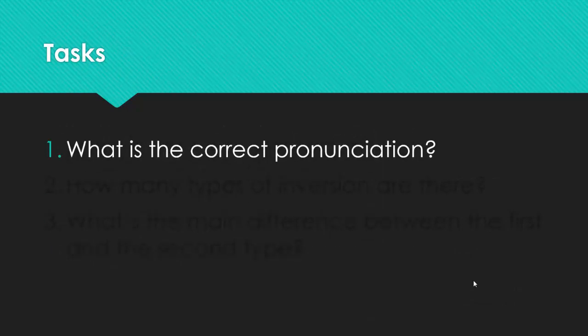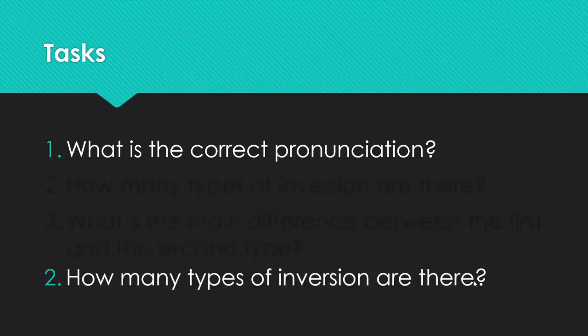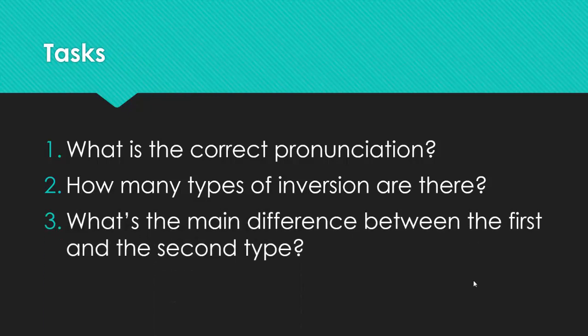Now it's your turn. Tell me, what is the correct pronunciation of the word? Inversion. Second question: How many types of inversion are there? Correct, two. What's the main difference between the first and the second type? Right. The first type is when we change places with the subject and the verb, and we put the object in the first place in the sentence. And the main difference between the first and the second, the second type, we put a lot of negative words, negations, at the beginning of a sentence.